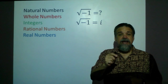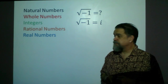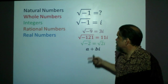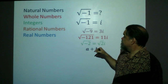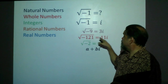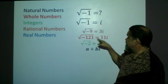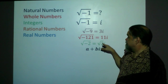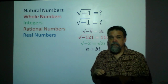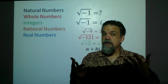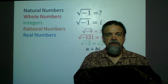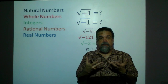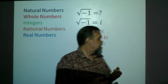i is an imaginary number — in fact, it's the imaginary unit. If i is the square root of negative one, then we can start taking the square root of other negative numbers: the square root of negative nine is three times i, the square root of negative 121 is 11 times i because 11×11 is 121 and i×i is negative one. The square root of negative two would be the square root of two — an irrational number — times i. So we have our real numbers, we have our imaginary numbers, and if you add a real number and an imaginary number together, you get a complex number: a + bi.